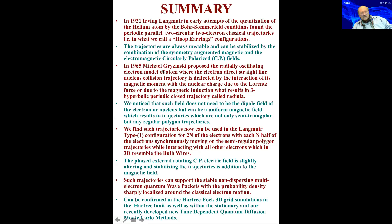Let me now summarize. In 1921, Irving Langmuir in early attempts of the quantization of the helium atom by the Bohr-Sommerfeld conditions found the periodic parallel circular two-electron classical trajectories in what we call the hoop earring configurations. The trajectories are always unstable and can be stabilized by the combination of the symmetry augmented magnetic and electromagnetic circularly polarized CP fields. In 1965, Michał Gryzinski proposed the radial oscillating electron model of atom, where the electron direct straight-line nuclear collision trajectories deflected by the interaction of its magnetic moment with the nuclear charge due to the Lorentz force results in three hyperbolic periodic course trajectory called radiola.